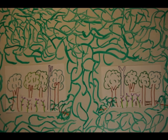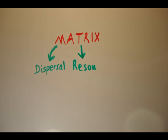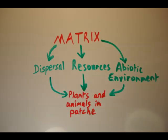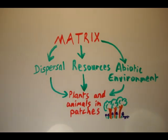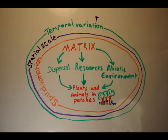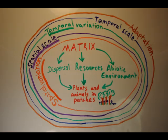These three core effects of the Matrix - movement, resources, and the abiotic environment - all affect native plants and animals in patches. But these effects also exist within five dimensions, and those dimensions change the way the core effects influence species. Let's have a look at these five dimensions.